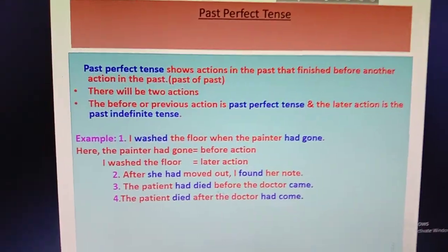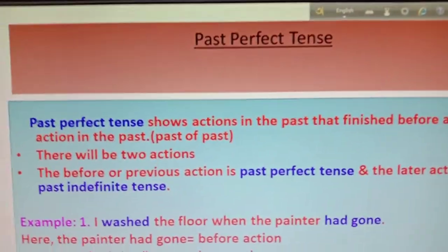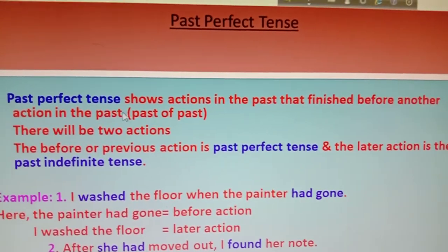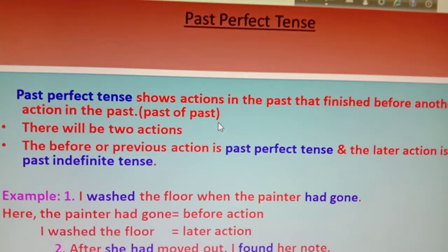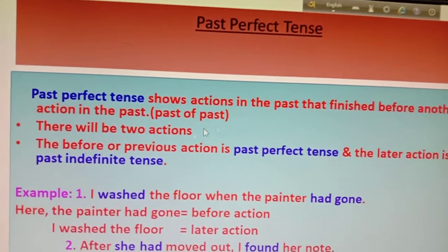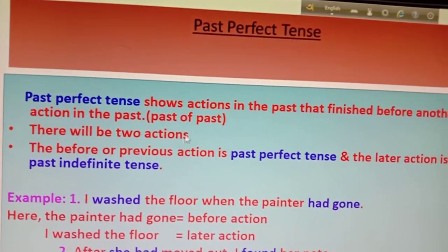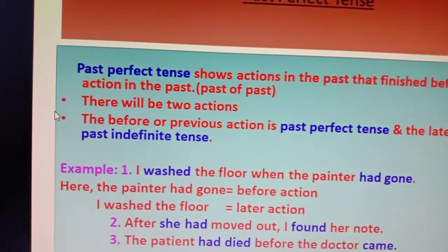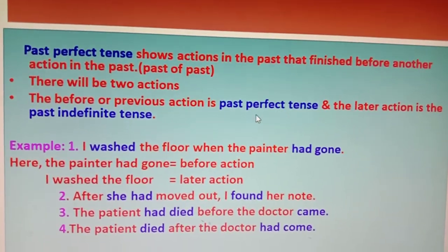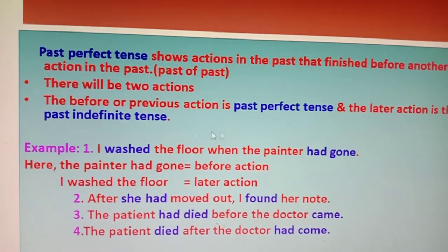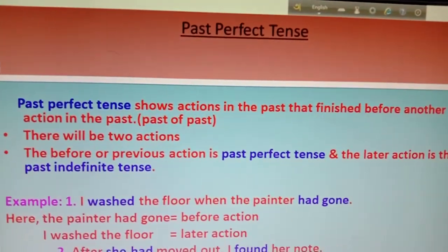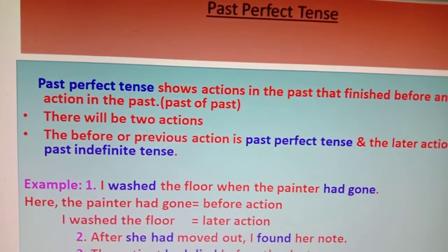Past Perfect Tense shows an action in the past that finished before another action in the past. That means there will be two actions. In short, we call it the 'past of past.' There will be two actions, and one action will happen before another action. The clue is: there will be two actions, and the before or previous action is called Past Perfect Tense.